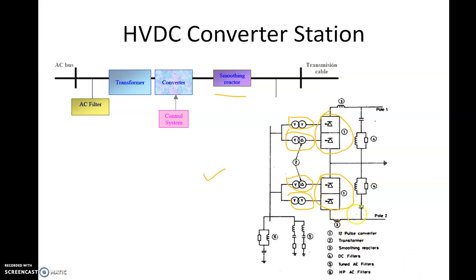Then we have something called a smoothing reactor. Smoothing reactors are kept immediately after the converters, once the power is converted to DC. You can see all the components shown here are in pairs. If there is a converter here, there is another one. If there is a smoothing reactor here, there is another smoothing reactor. These are in pairs because we are working on two lines or two poles — pole one and pole two.